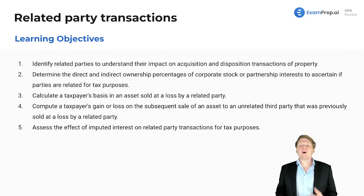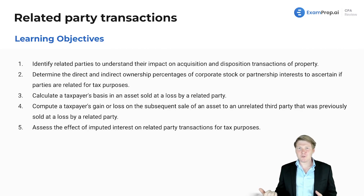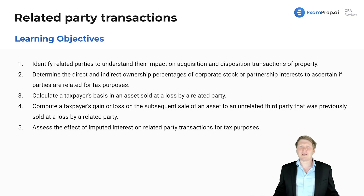First, we're going to want to identify related parties and understand their impact on an acquisition or disposition of property. It's important to understand what the application is if you sell something to a brother, sister, family member, or someone who's in business with you and also owns a percentage of the company.